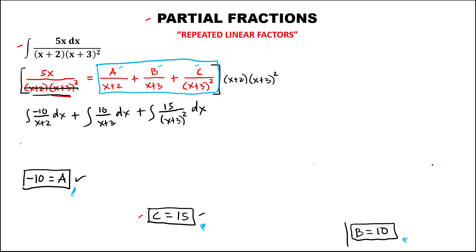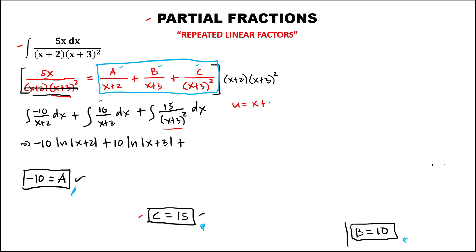To find each integral, we put the constants outside. The first term gives -10 ln|x+2|, and the second term gives +10 ln|x+3|. For the last term, we use u-substitution: let u = x+3, so du = dx, and the integral becomes 15 times the integral of u⁻² du.